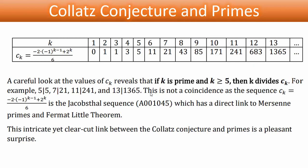But this is not a coincidence, as the sequence c_k, which equals to this expression, is the Jacobsthal sequence, which here is the sequence reference in the online encyclopedia for integer sequences. This sequence has direct links to Mersenne primes and Fermat little theorem. So, this intricate yet clear-cut link between the Collatz conjecture and primes is definitely a pleasant surprise.